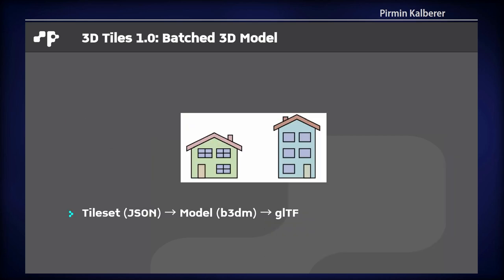What I'll do now is first talk about the current standard, and then talk about the changes in the new version. There are different kinds of objects in 3D tiles. One is the batched model, where you have a certain number of models — here you have two houses, two models in a certain format. It has a JSON part describing the bounding box, and the model itself is in a binary format, B3DM, which contains GLTF. GLTF is a well-known 3D model format embedded in the B3DM file with additional properties.